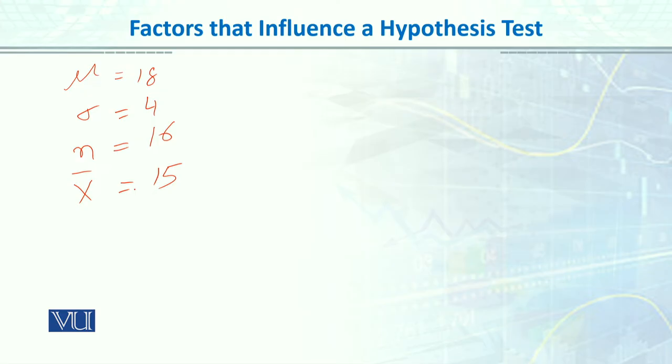This is the sample mean we have known. Now, when we had z to calculate it, it was minus 3, and we said that null hypothesis is rejected.